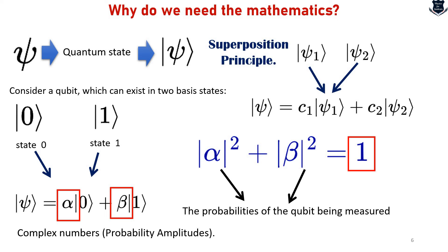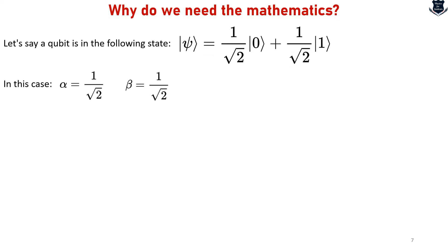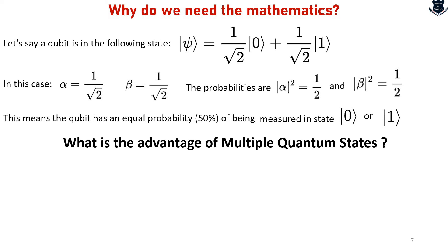So here what we are doing is measuring the probabilities of the qubits. Now let us say a qubit is in a following state. In this case, alpha equals 1 over the square root of 2 and beta equals 1 over the square root of 2. The probabilities would be the squares, which give one half each. This is mathematics, but what does it mean in simple language? It means that the qubit has an equal probability — 50-50 — to be in state 0 or state 1. And this can be exploited in what is called multiple quantum states, which we will look into.